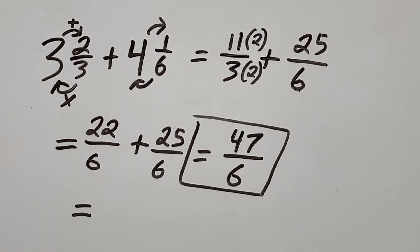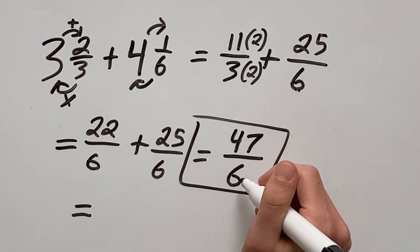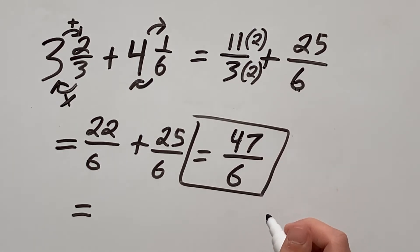This is a fine answer but if you want to finish with a mixed number like you started with, we can convert 47 over 6 which is an improper fraction back to a mixed number.